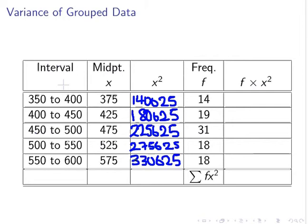Now, these numbers get big and there's just no way around that really. Next, what we're going to do is compute the product of each. So for each interval, we're going to multiply f by x squared.